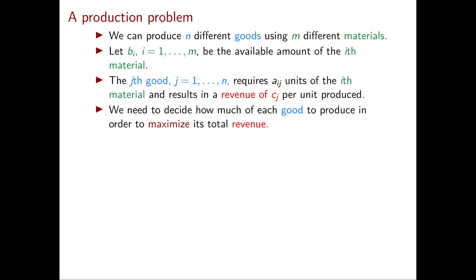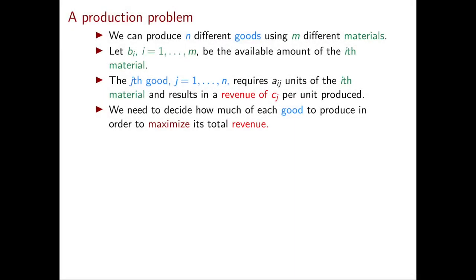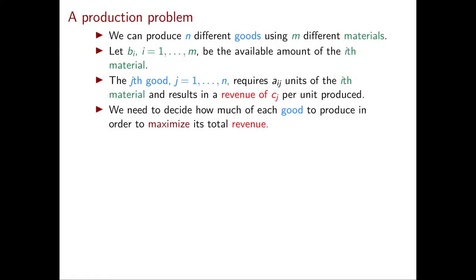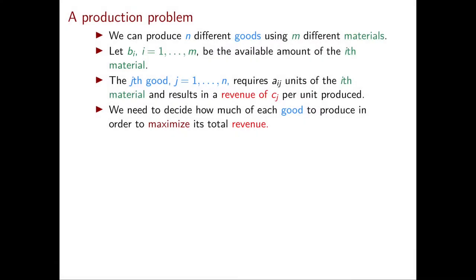In our production problem we have n different goods and m different materials. We also know exactly the available amount of every material that we have and this is encoded in the number b_i for i that goes from 1 to m. Therefore b_1 will be the available amount of the first material, b_2 of the second material, and so on and so forth.